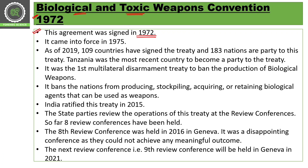The Biological and Toxin Weapons Convention came into force in 1975 — three years after it was signed in 1972. As of 2019, 109 countries have signed the treaty and 183 nations are party to it. The most recent country to become a party to the treaty is Tanzania.